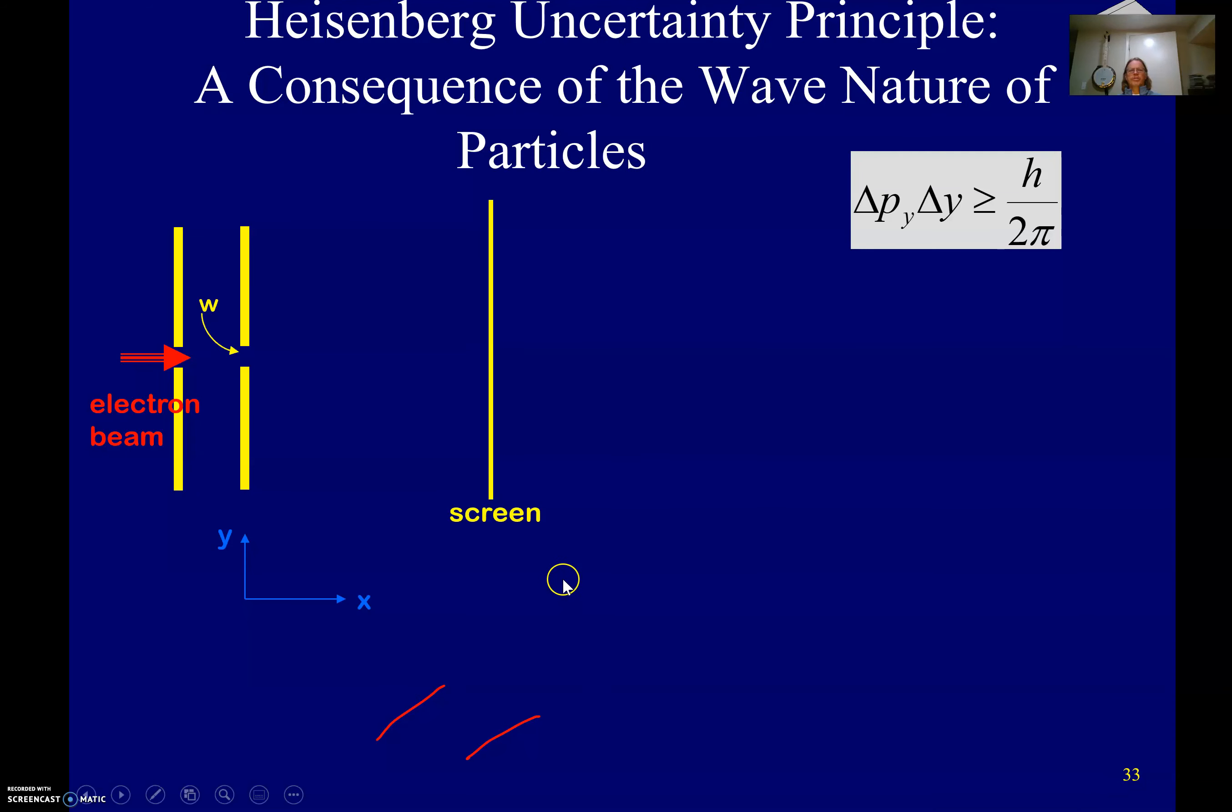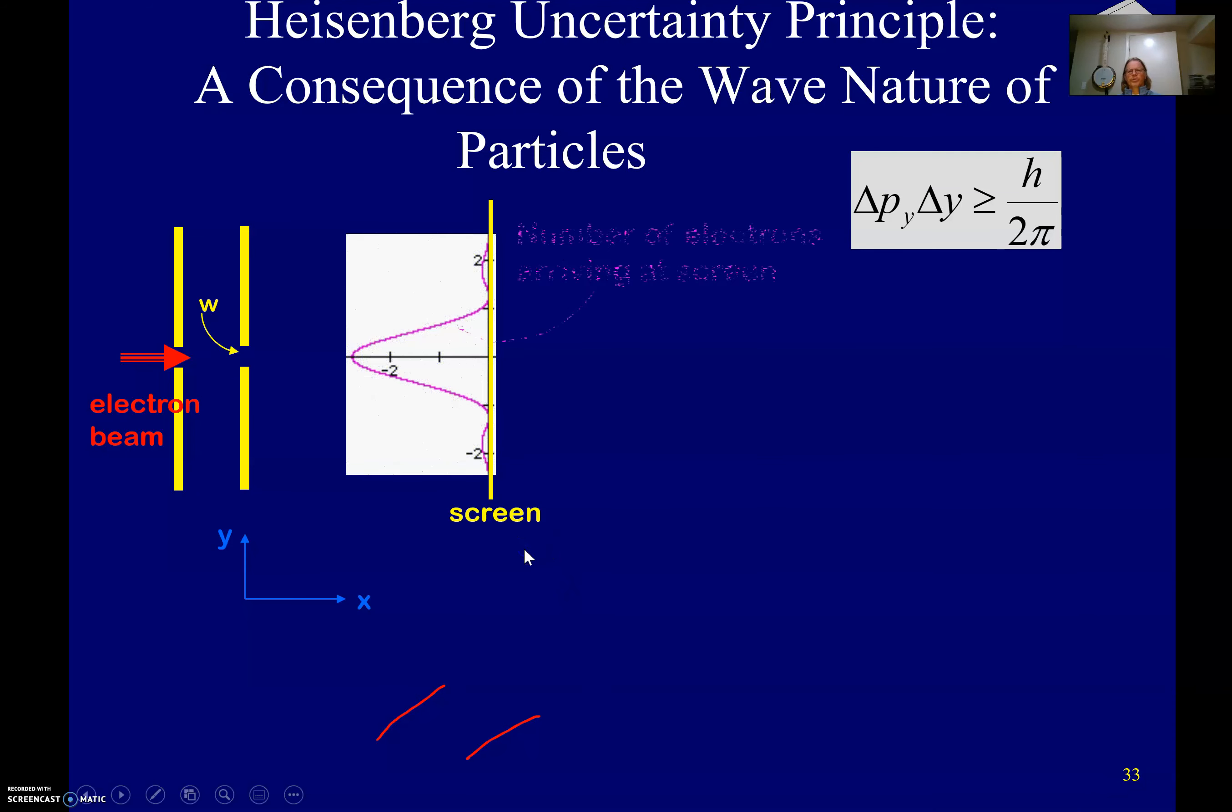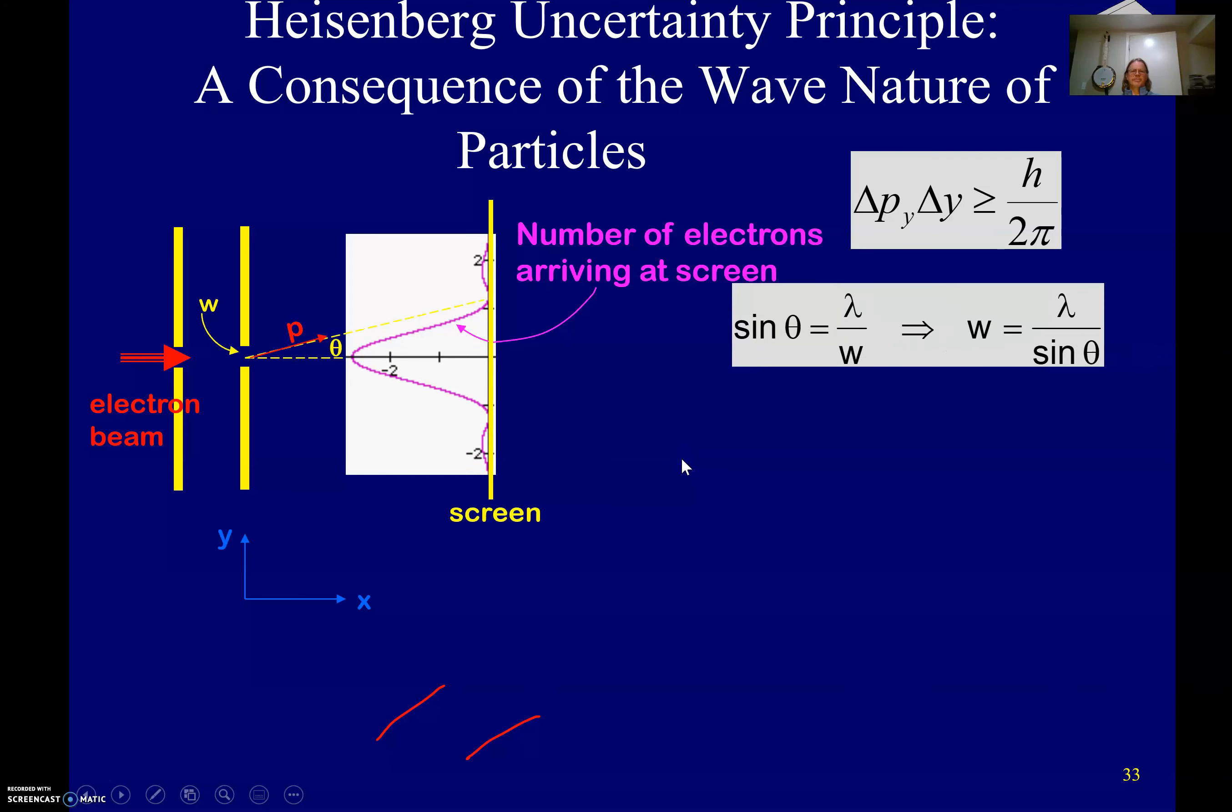Heisenberg and Schrödinger principle, the consequence of the wave nature of particles. So that's kind of a consequence of that whole thing, the electrons coming through and the probability of finding electrons here, there, there, but not so much there. This is kind of the same idea.